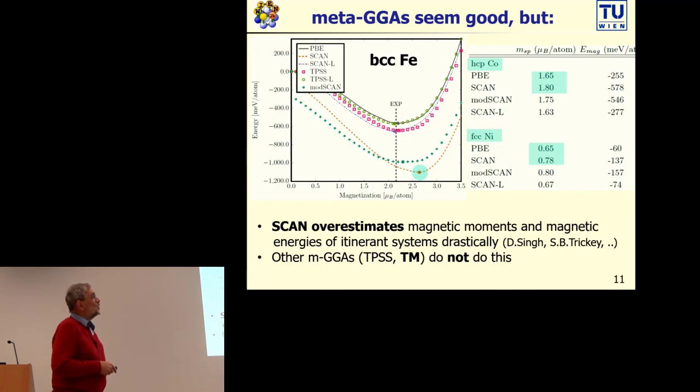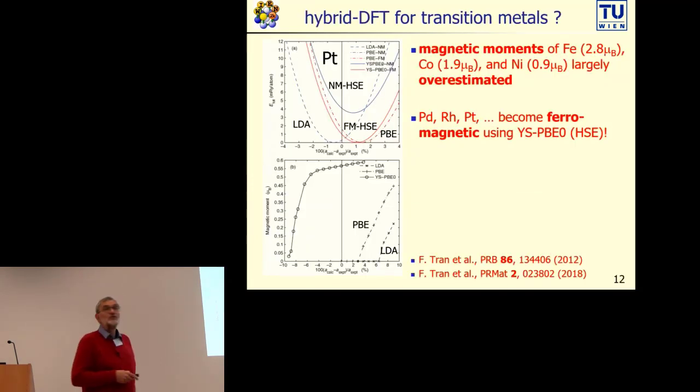Should we use hybrid functionals? We also saw that they perform quite well. Well, they also have the problem with itinerant metals. In particular, for instance, they predict palladium, rhodium, and platinum to be ferromagnetic metals. So if you want to study catalysis on cerium oxide where you need maybe a hybrid DFT functional put on platinum, yeah, bad luck, platinum is ferromagnetic.